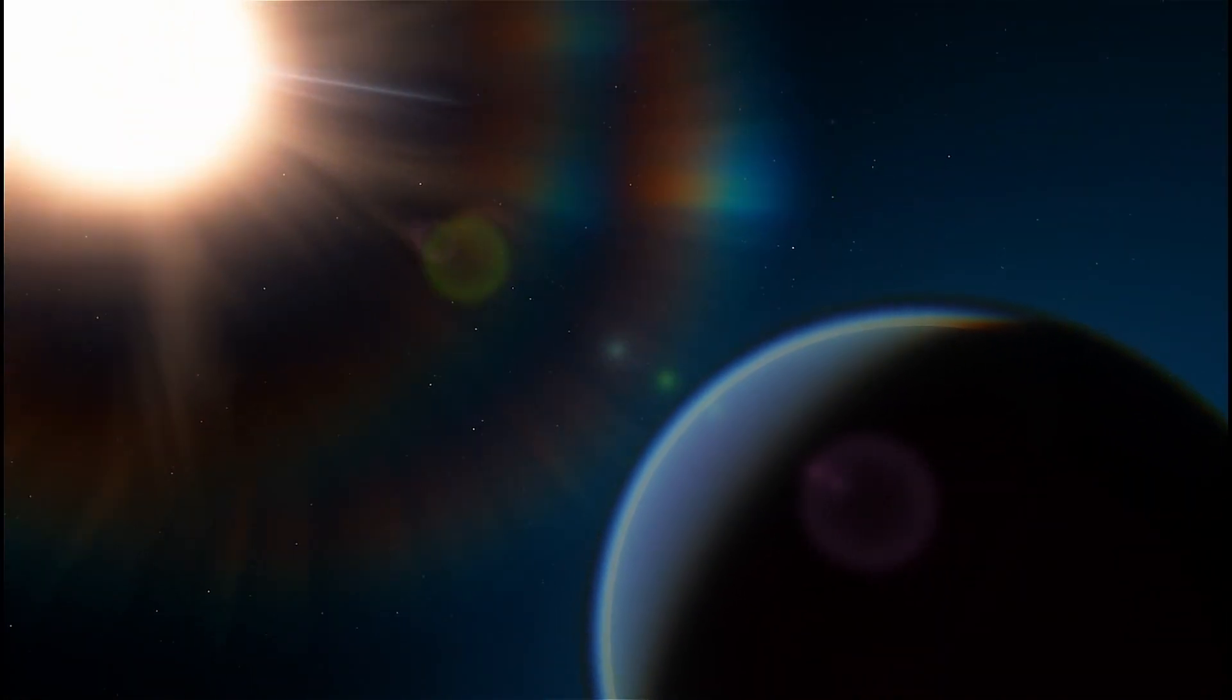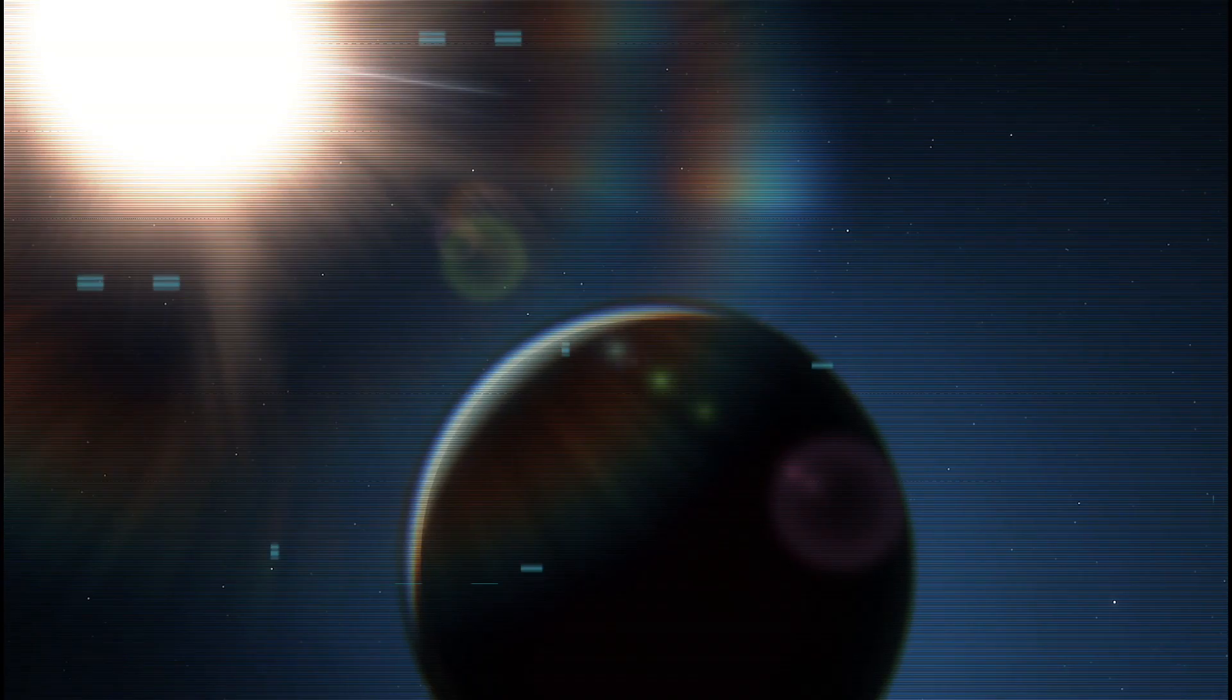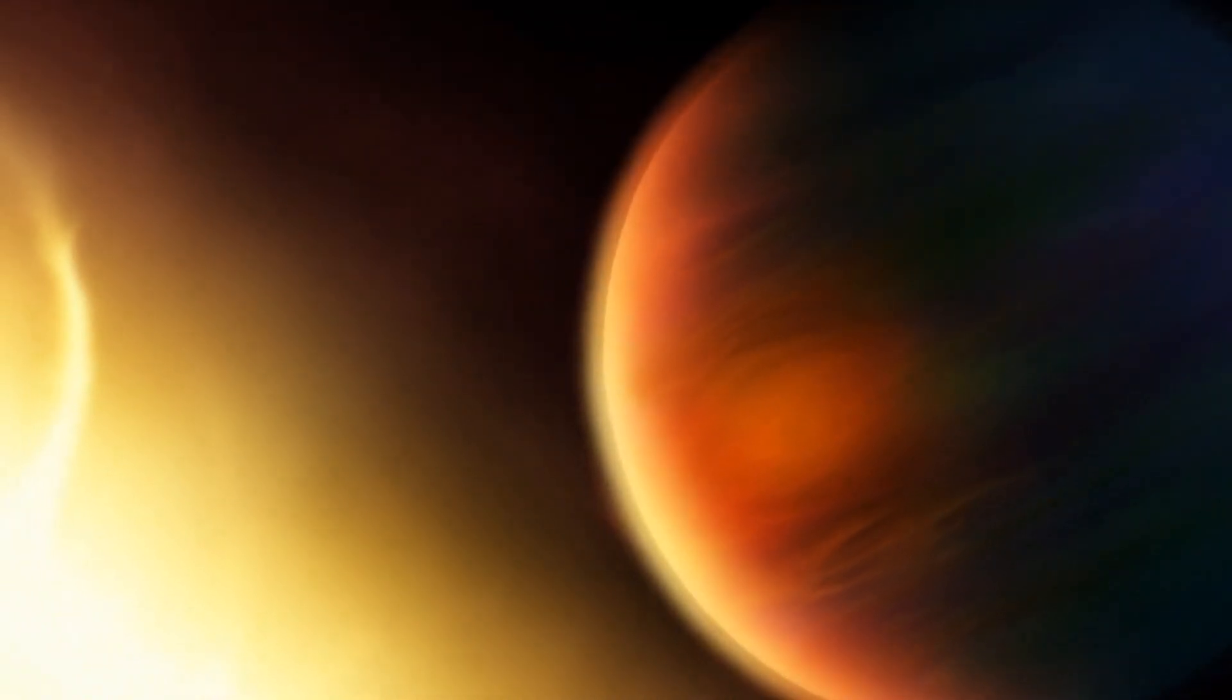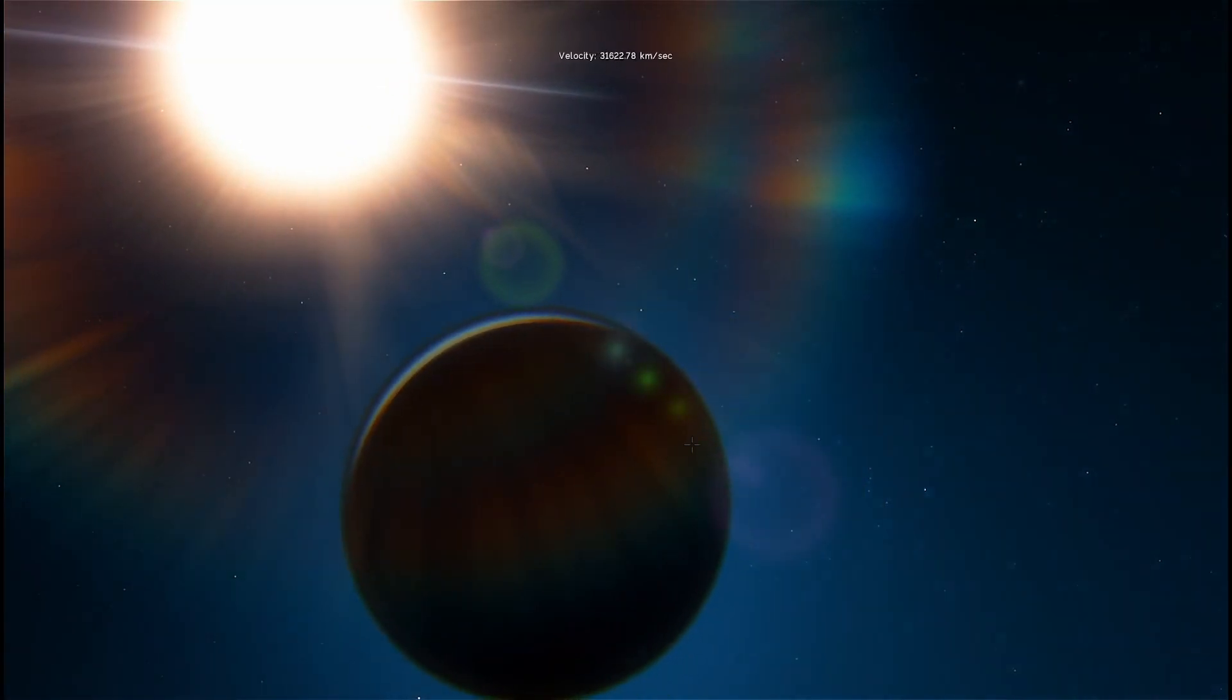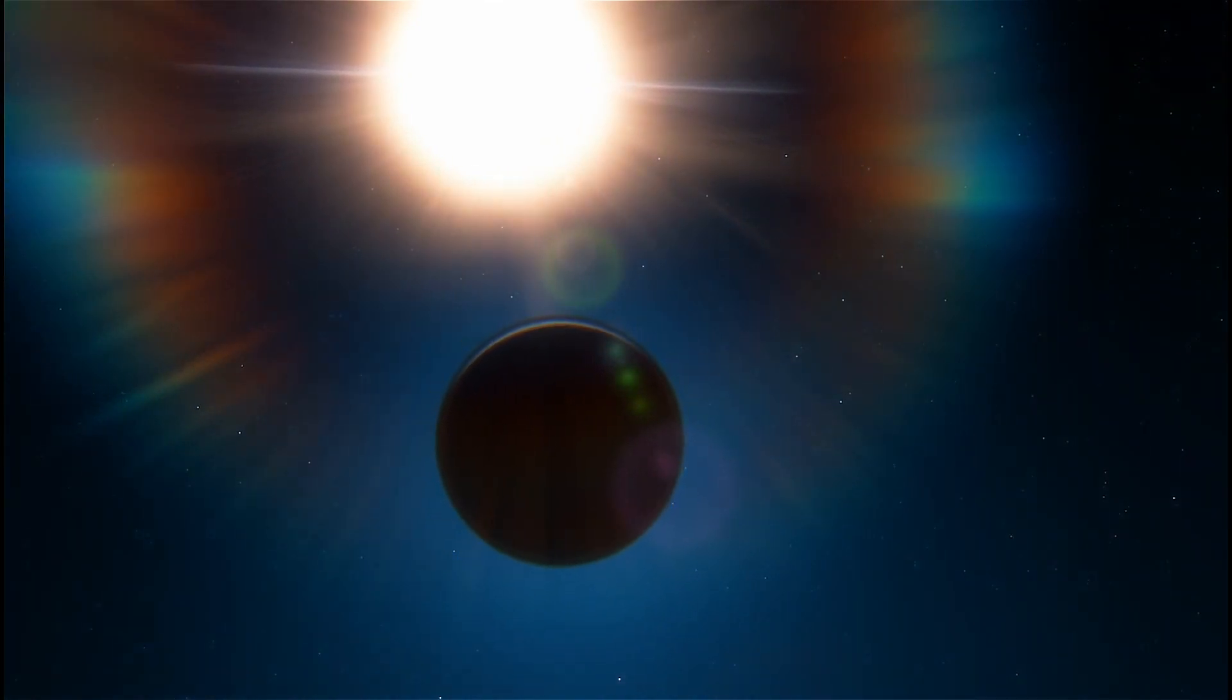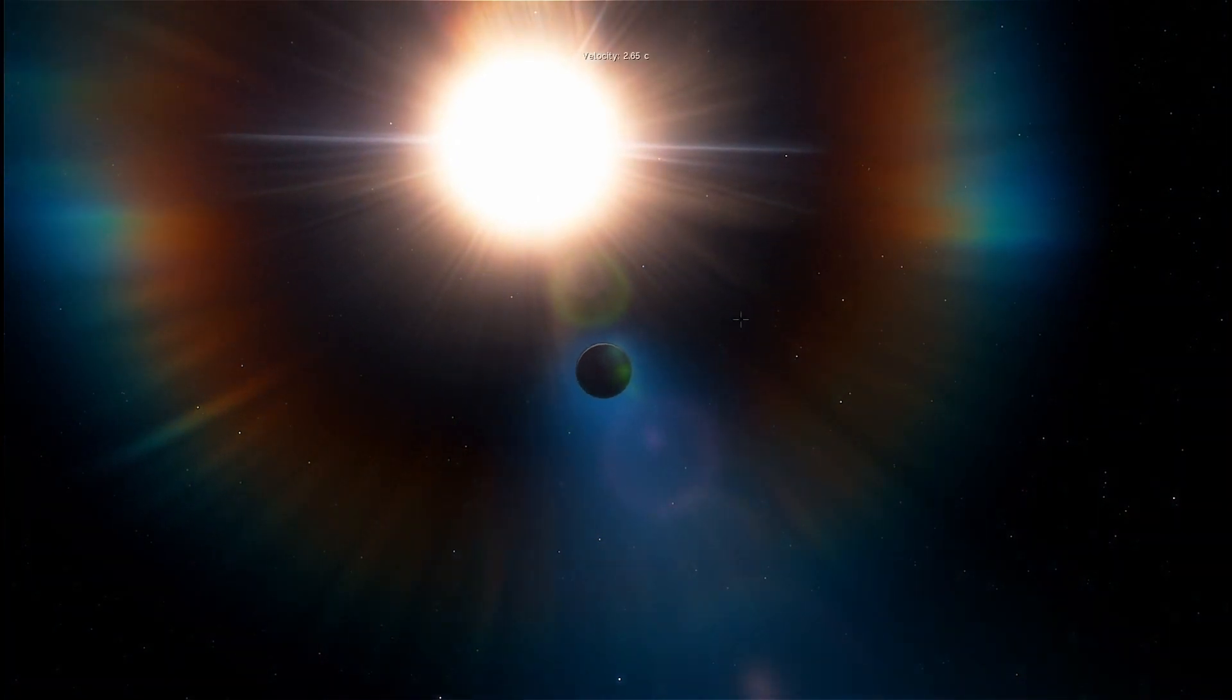The researchers uncovered distinct sodium signatures in the atmosphere of WASP-96b, an exoplanet located nearly 1,000 light-years from Earth. WASP-96b is about 20% larger than Jupiter and has roughly the same mass as Saturn. But since it's much closer to its host star than Saturn is to the Sun, its sweltering temperature drops it into the hot Saturn category.